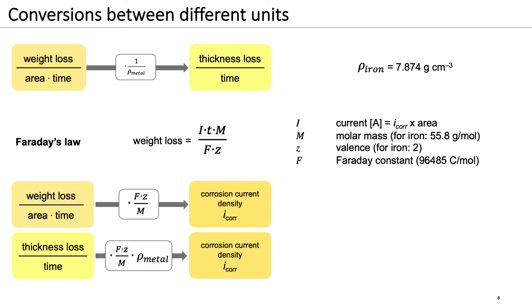For the example of iron, a corrosion current density of 1 microampere per square centimeter corresponds to 0.0116 millimeters per year.